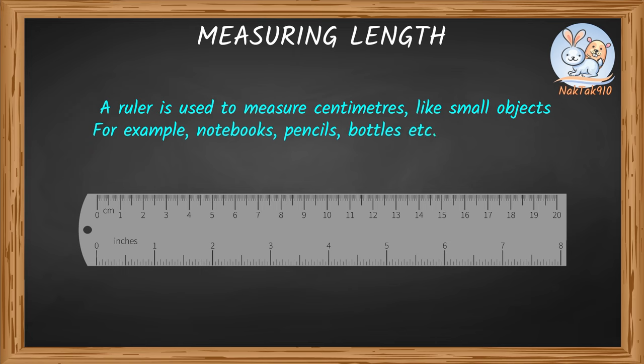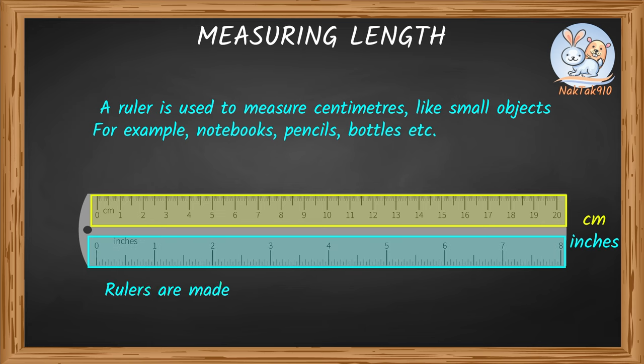Most rulers come with two measurements: metrics, centimeters, and inches. Rulers are made usually in lengths of 15 centimeters and 30 centimeters.